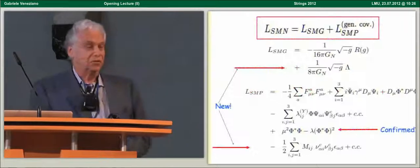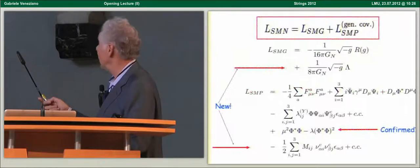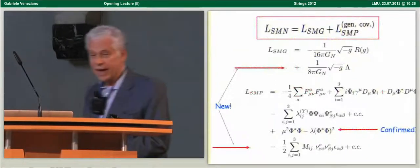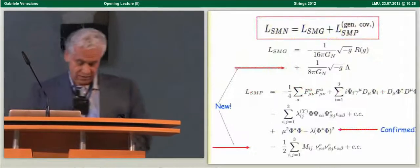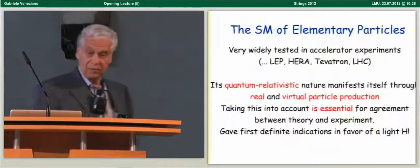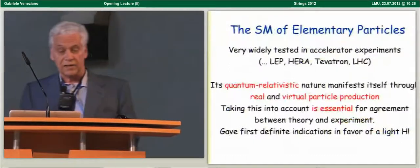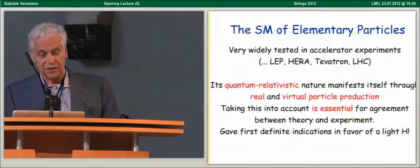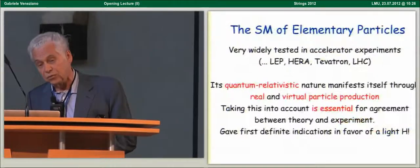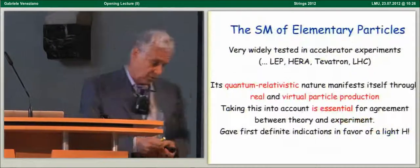Most of this could have been written 40 years ago, almost 40 years ago. There are, of course, some new entries, this dark energy component, neutrino masses, and maybe by now, even this line, the Higgs sector, has been confirmed. Now, I remind you that the standard model of elementary particles has been very widely tested in accelerator experiments.